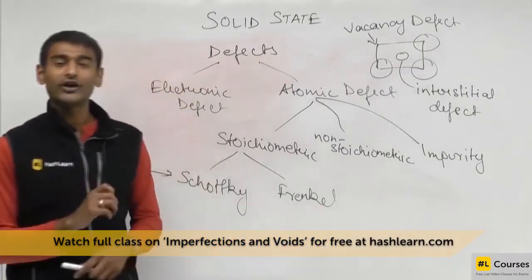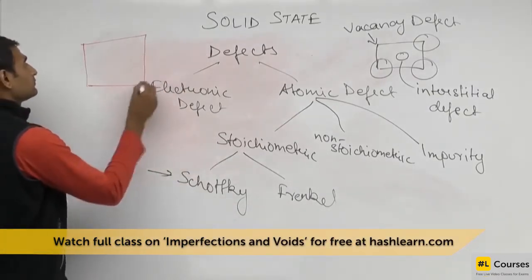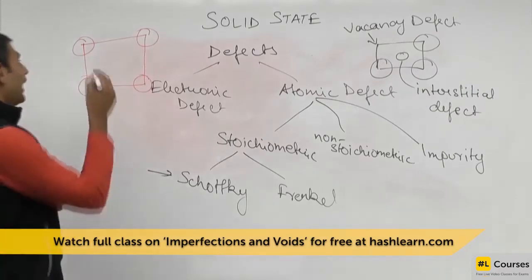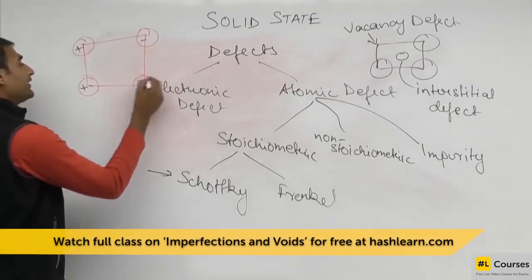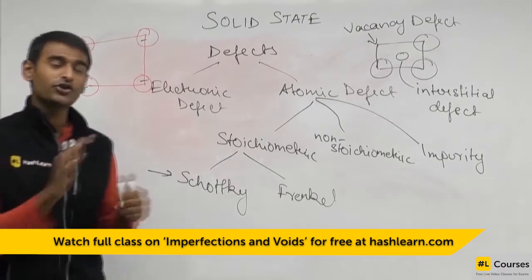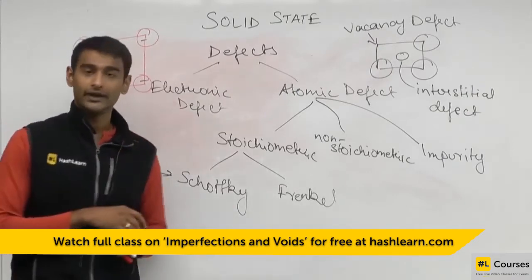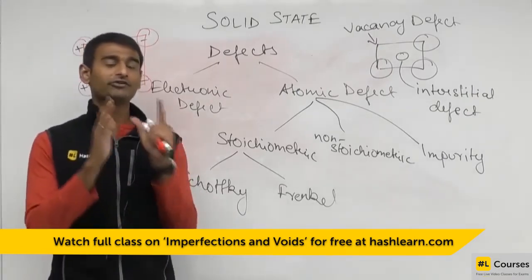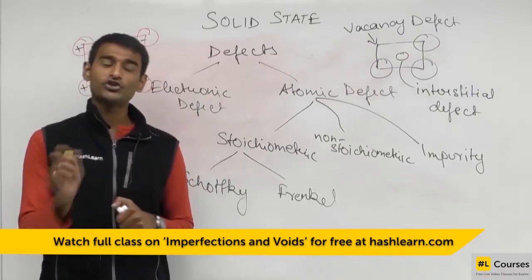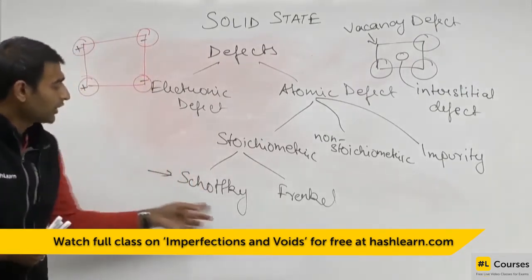In Frenkel defect, the density of the solid does not change. Now, suppose this is an example: this is a positive ion, this is a negative ion. If equal numbers of positive and negative ions are missing from the compound, the ratio is still maintained. Suppose a compound has 10 cations and 10 anions, and 1 cation and 1 anion are missing — the ratio is still 1:1 because now you have 9 cations and 9 anions. This type of defect, in which equal numbers of cations and anions are missing, does not affect the stoichiometry but decreases the density — that is called a Schottky defect.